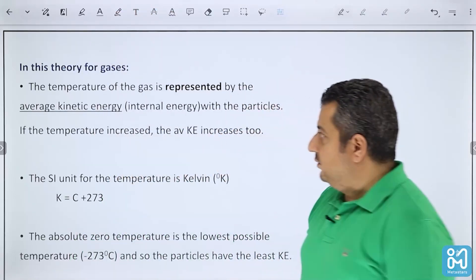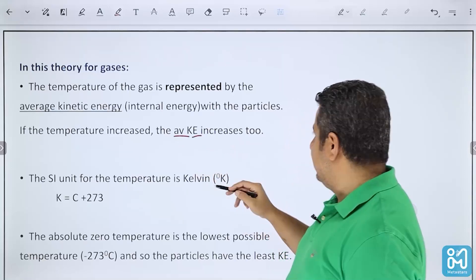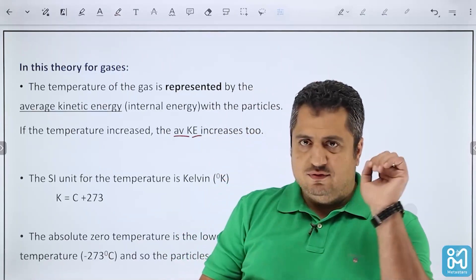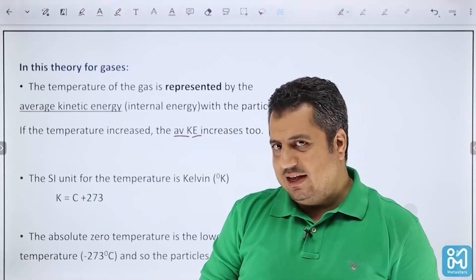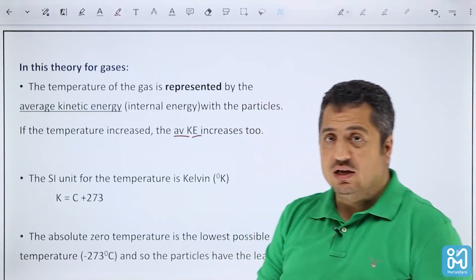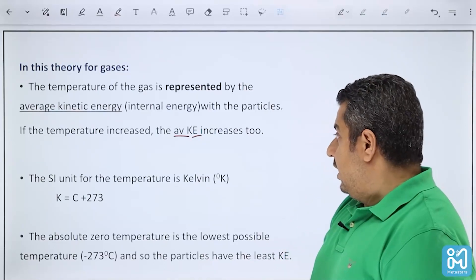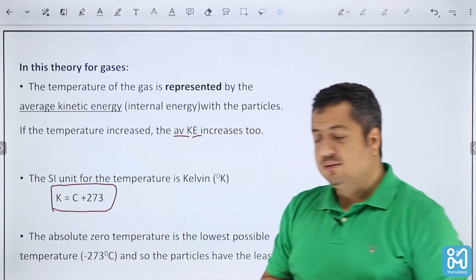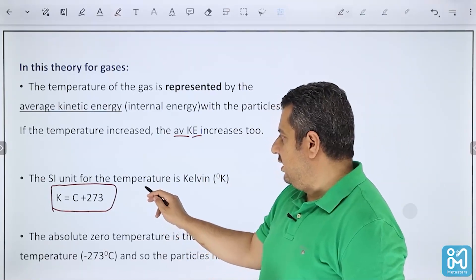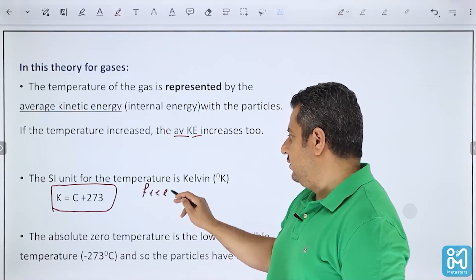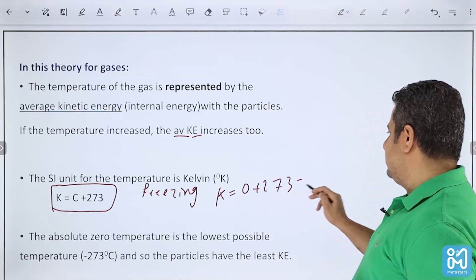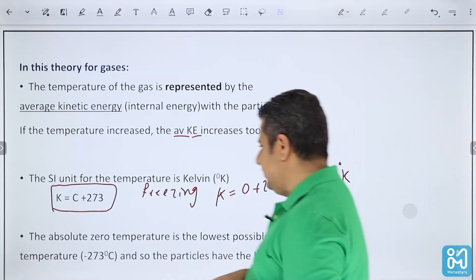In SI units, the SI unit for temperature is the Kelvin. You need to know how to convert between Kelvin and Celsius. The formula is: Kelvin = Celsius + 273. So if I want to find the freezing point of water, which is 0 Celsius, the Kelvin value is 0 + 273 = 273 Kelvin.